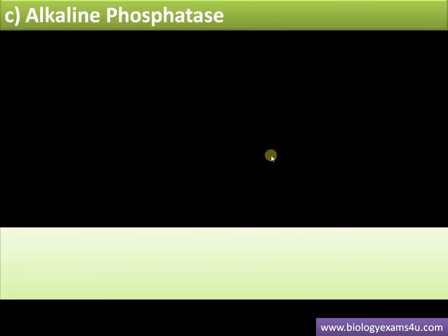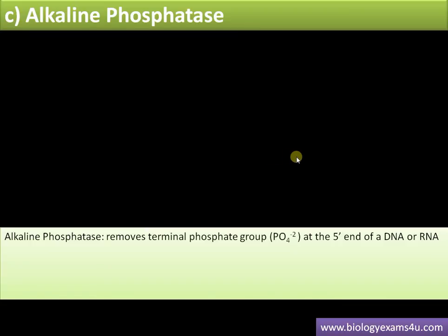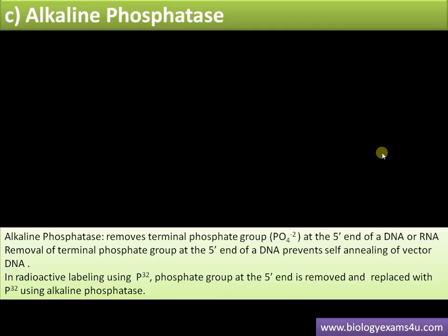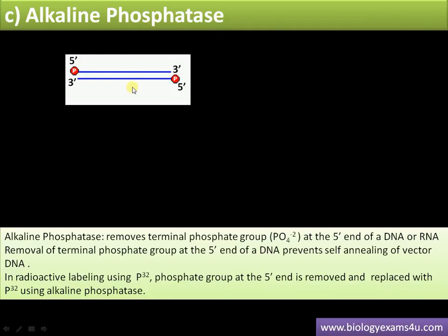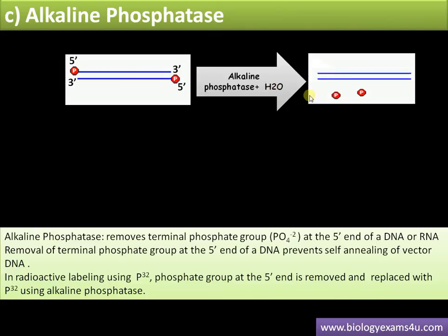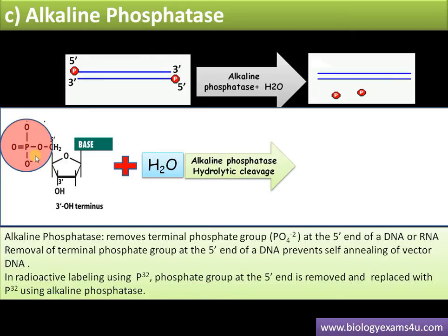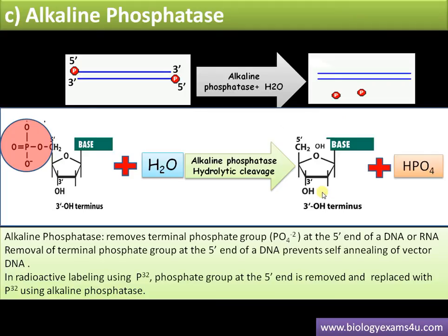Next is alkaline phosphatase. Alkaline phosphatase removes terminal phosphate groups from the 5' end of DNA or RNA. This helps prevent re-annealing of vector DNA in recombinant DNA technology, and also facilitates radioactive labeling using P32. In the reaction, a phosphate group at the 5' end of a double-stranded DNA molecule is removed by alkaline phosphatase in the presence of water — this is dephosphorylation via hydrolytic cleavage. The function of alkaline phosphatase is phosphate removal from the 5' end of a DNA or RNA strand.